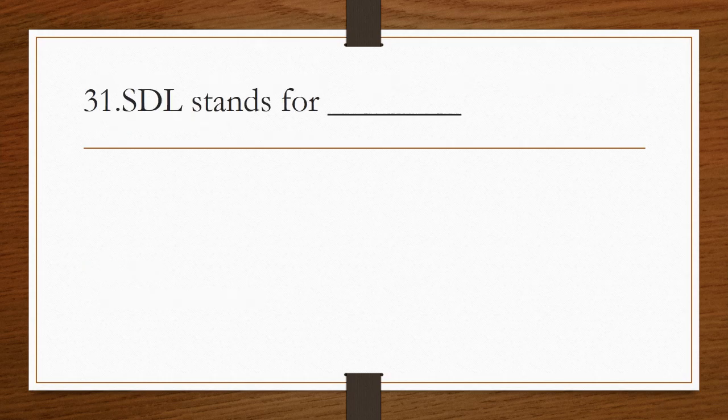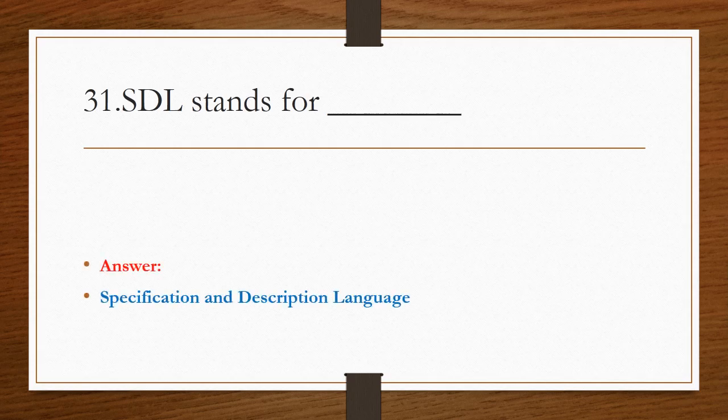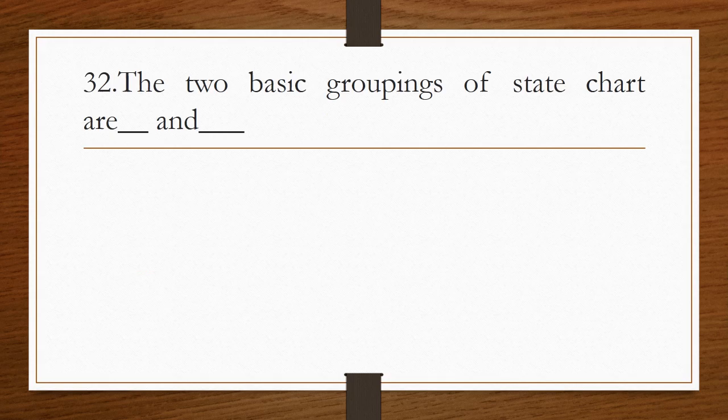SDL stands for specification and description language. The two basic groupings of state chart are blank and blank, that is OR and AND groupings.